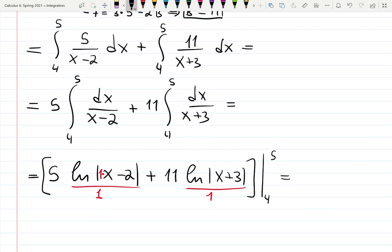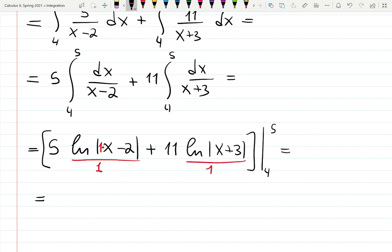So I'm plugging top minus the bottom. It will be 5 natural log of 5 minus 2, that's just 3. You don't have to put absolute value because 3 is positive. Plus 11 natural log of 5 plus 3, that's 8, minus 5 natural log of, plugging 4, 4 minus 2, that's just 2, minus, minus because there's a minus in the formula top minus bottom, 11 natural log 4 plus 3 is 7. And that is the answer, it is some kind of number.